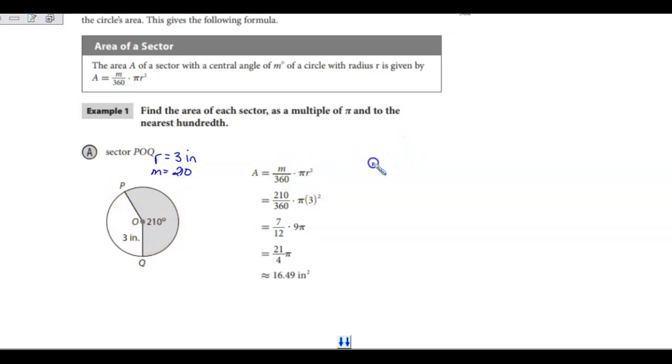I'm going to take my 210 degrees and divide it by 360, and multiply that by pi times my radius, which is 3 squared. I know that 3 squared is 9, so that's 9 pi.